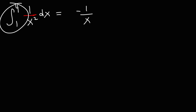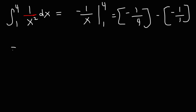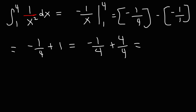When dealing with a definite integral, we're not going to use the constant of integration c — it's not going to be important here. So we're going to write the antiderivative negative 1 over x and evaluate it from 1 to 4. We plug in 4 first: negative 1 over 4, then minus negative 1 over 1. So we have negative 1 over 4 plus 1. Since 1 equals 4 over 4, negative 1 over 4 plus 4 over 4 is 3 over 4. That is the value of this definite integral.